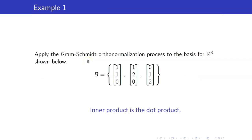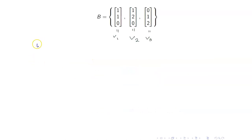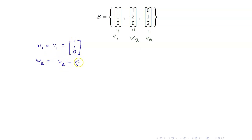For example, let us apply the Gram-Schmidt orthonormalization process. We now turn this into an orthogonal basis. W1 is the same as V1. Next, W2 equals V2 minus the inner product of V2 with W1, over the length of W1 squared, times W1.